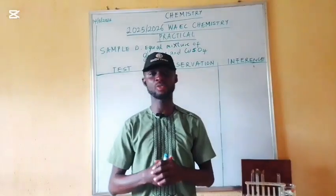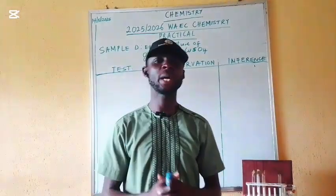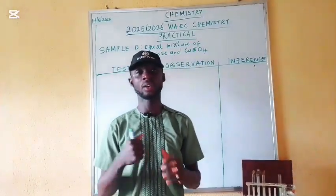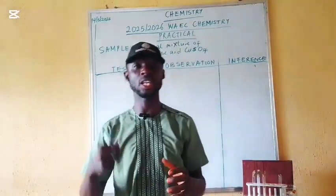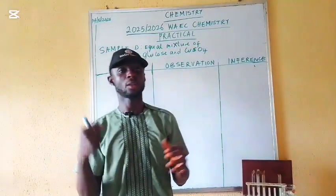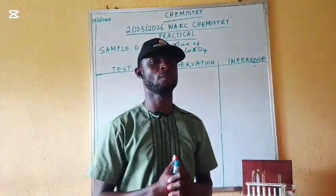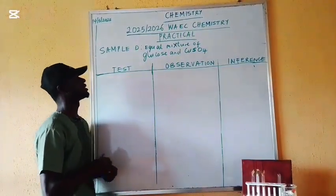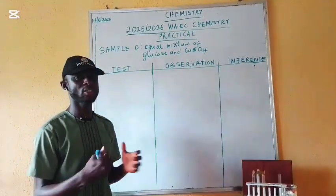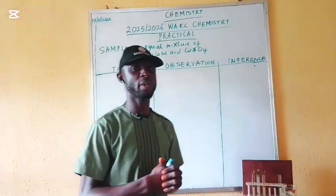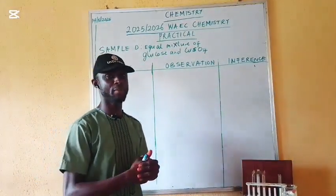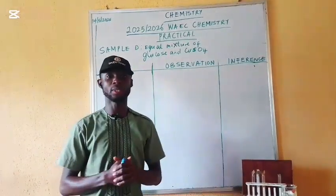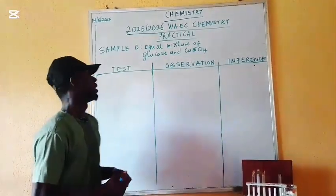This year in the practical, the sample they gave to us is glucose and copper sulfate. We are asked to mix equal ratios of glucose and copper sulfate together. I am calling this mixed sample 'Sample B.' Let's look at the likely tests they may ask us to try on this experiment, and the likely observations and inferences we can get.